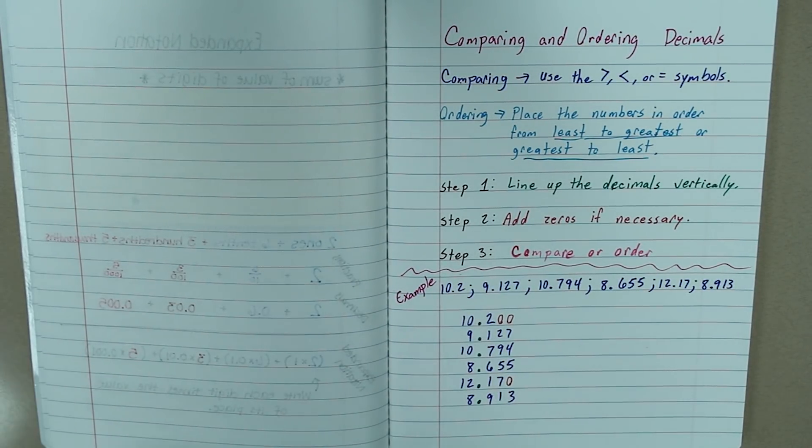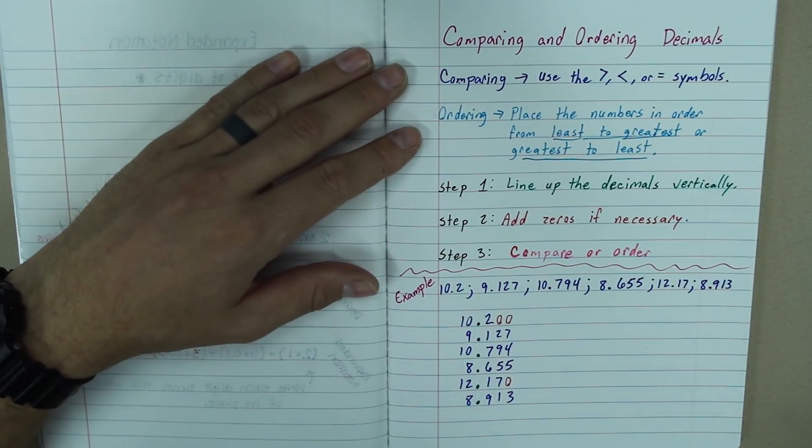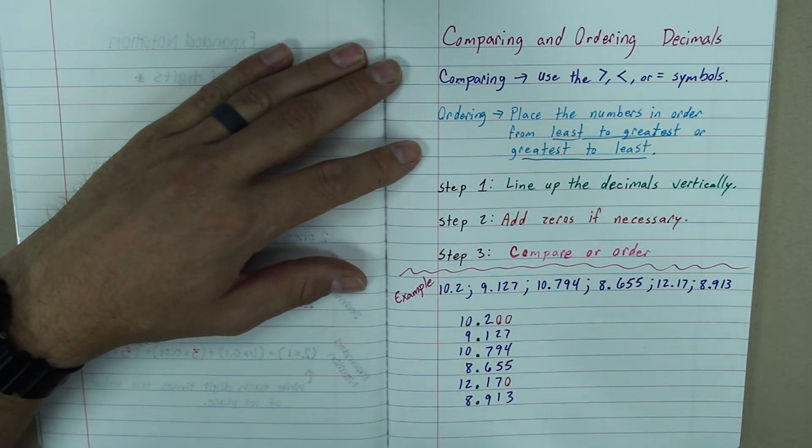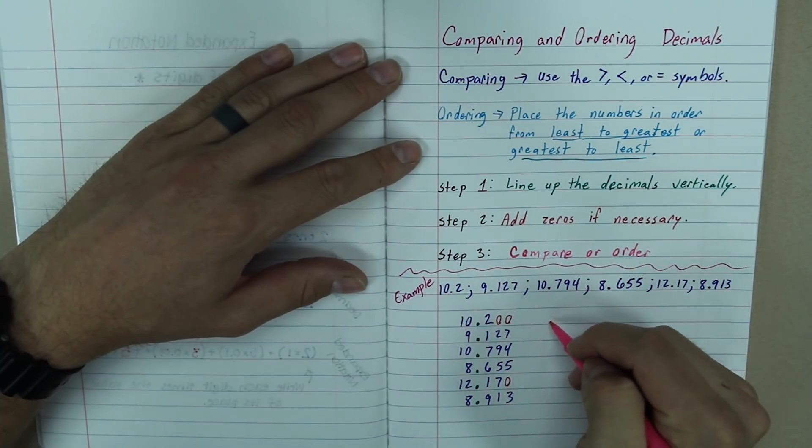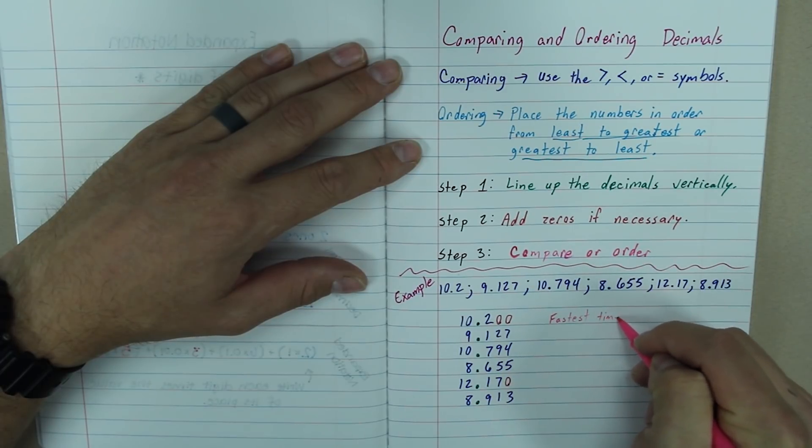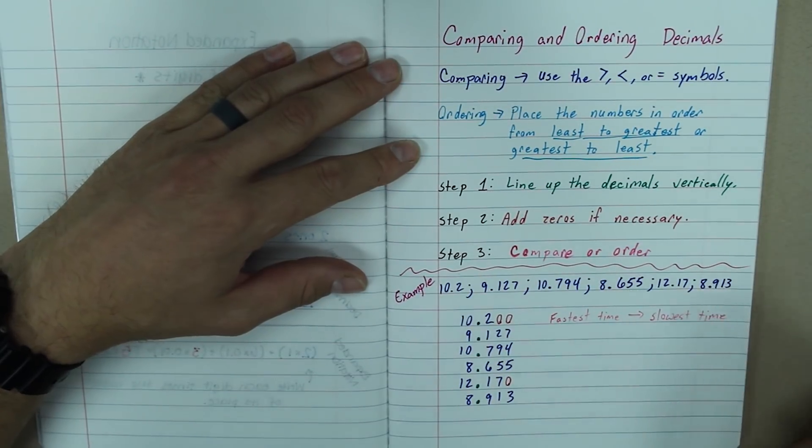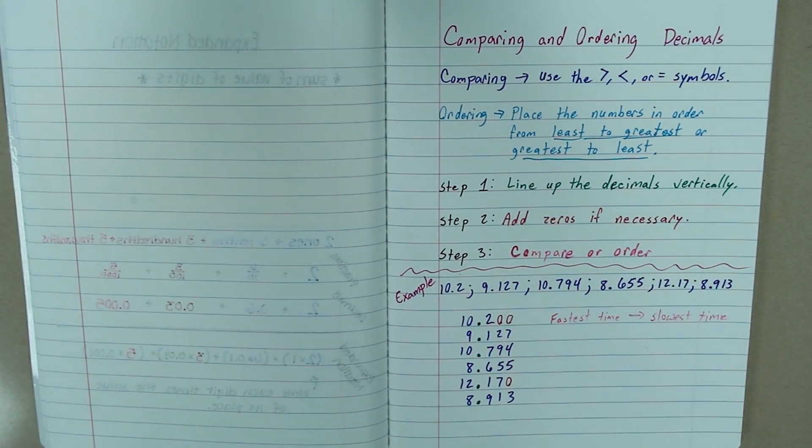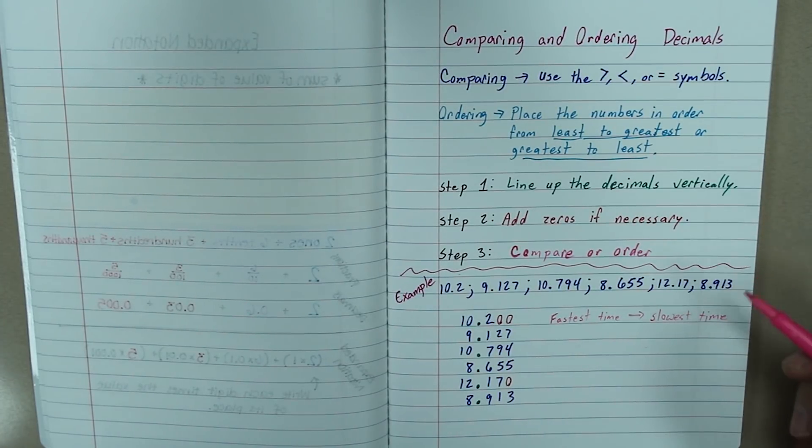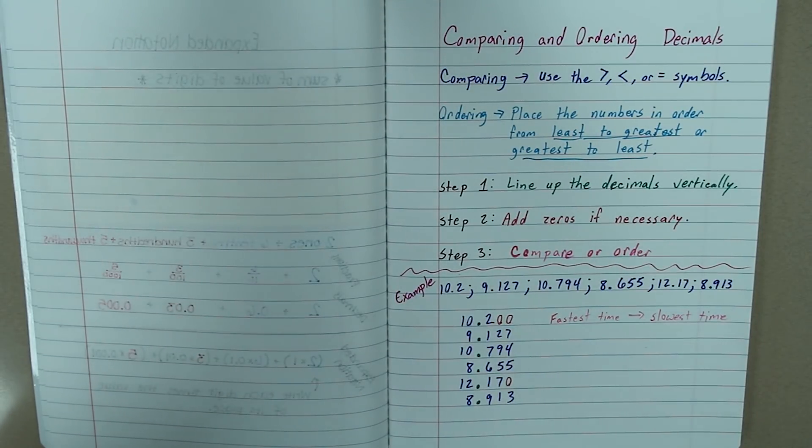Now, what if we are at step 3 but we are supposed to compare or order. So, what if our paper or our activity told us to order them from fastest time to slowest time. Now, this can be a little confusing. Because this is not least to greatest or greatest to least.